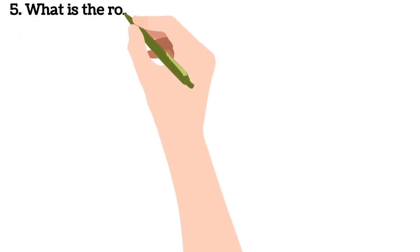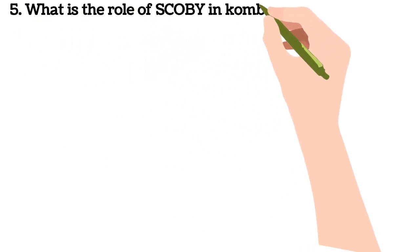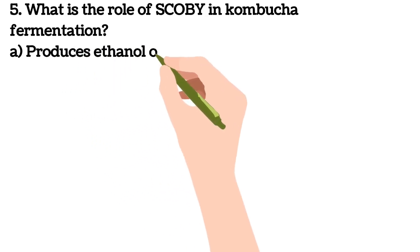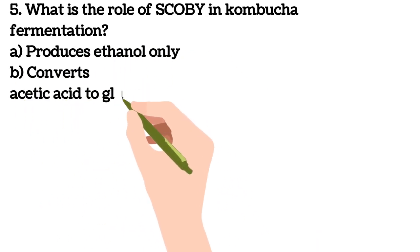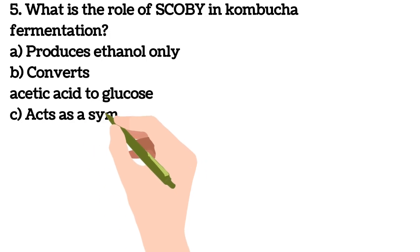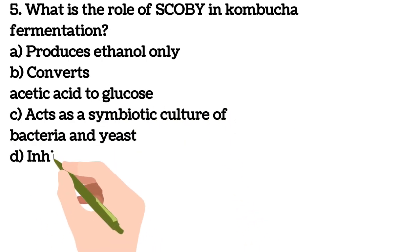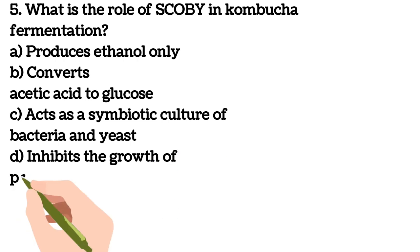Fifth question: what is the role of SCOBY in kombucha fermentation? A) It produces ethanol only, B) Converts acetic acid to glucose, C) Acts as a symbiotic culture of bacteria and yeast. Your answer is C.